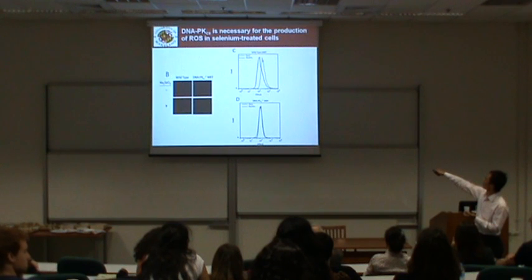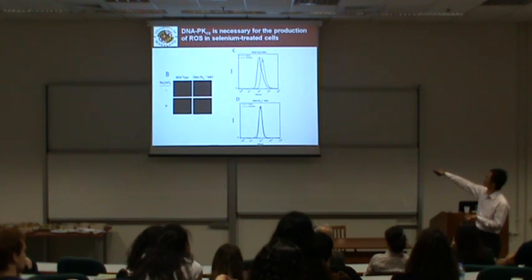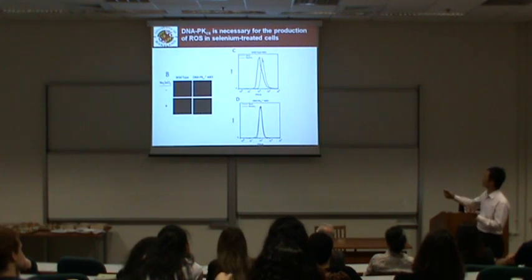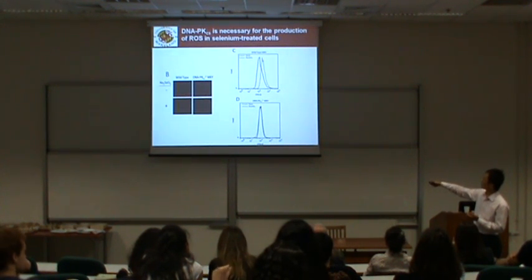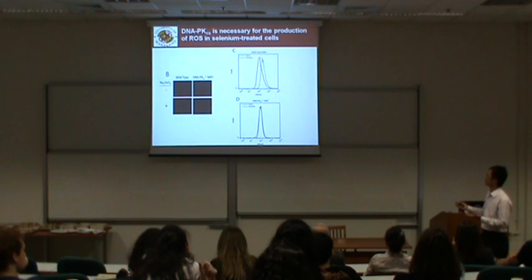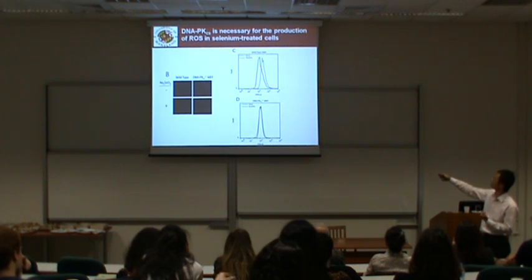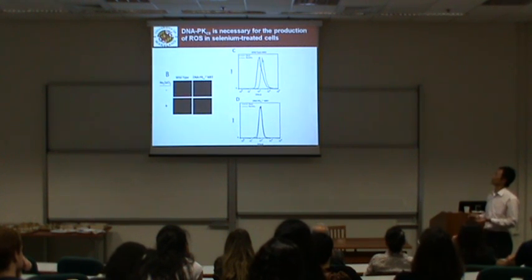In normal cells expressing DNA-PKCS, after selenium treatment there is an increase in reactive oxygen species. But in cells without DNA-PKCS, there is no selenium-induced increase in ROS formation. The interpretation is that DNA-PKCS is necessary for the production of reactive oxygen species in selenium-treated cells.